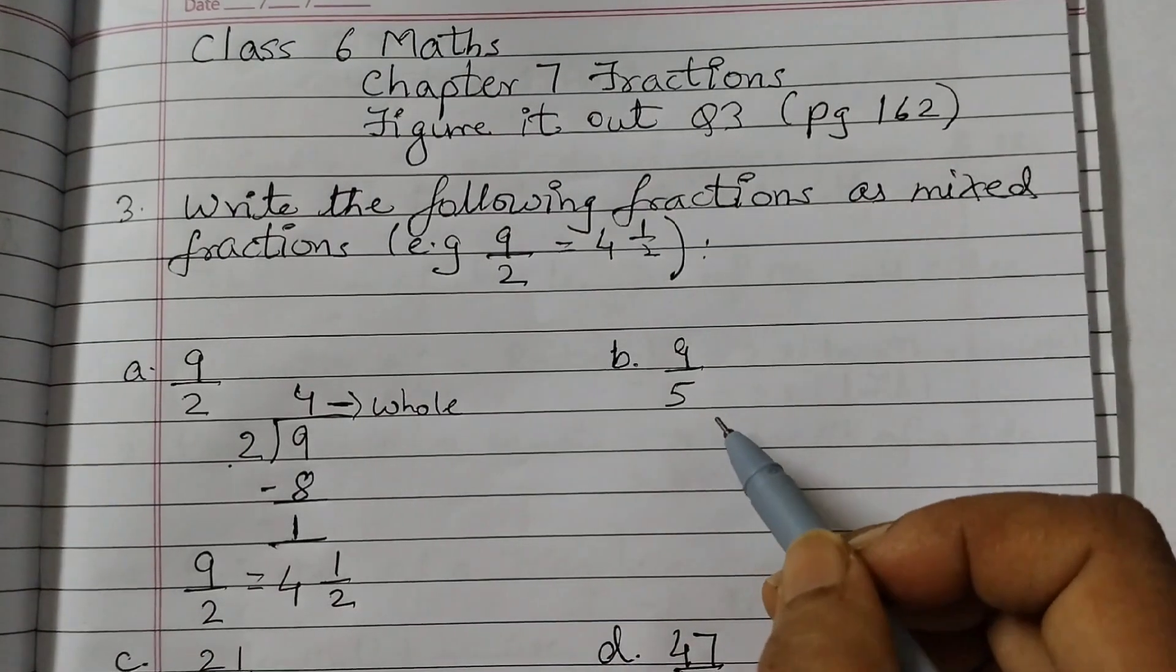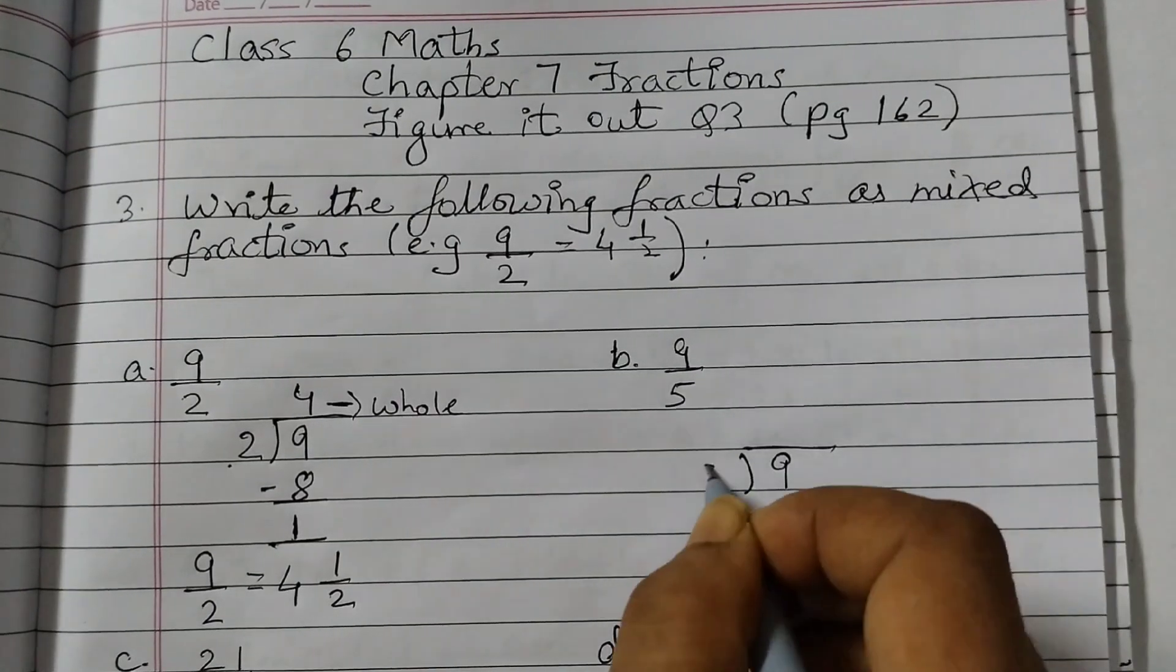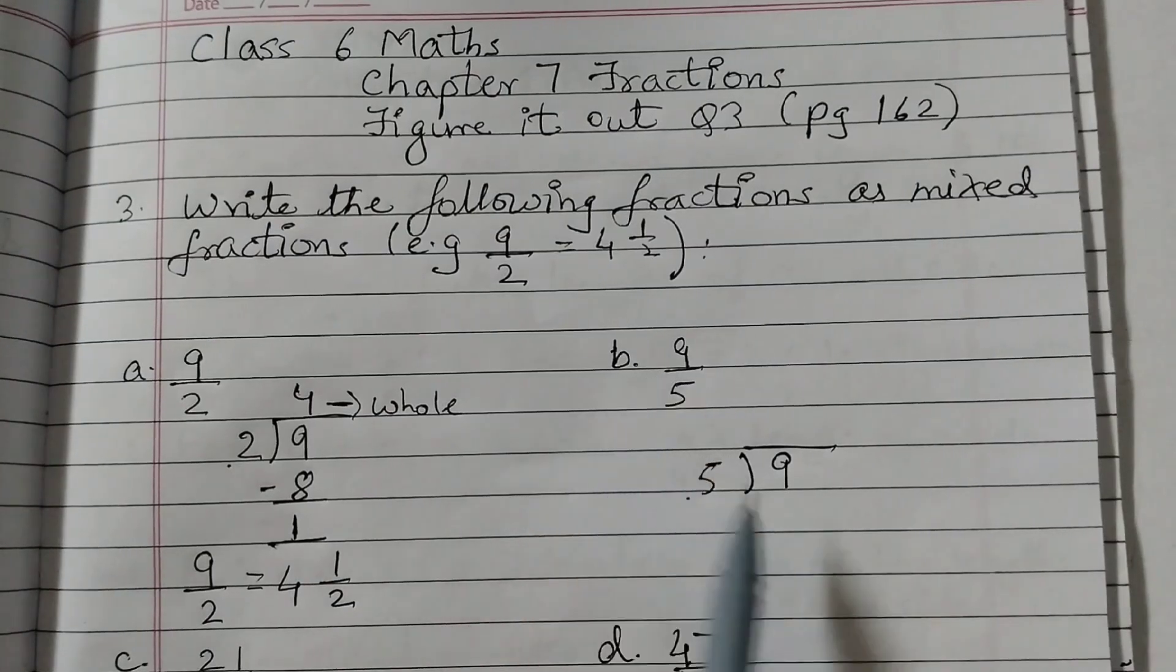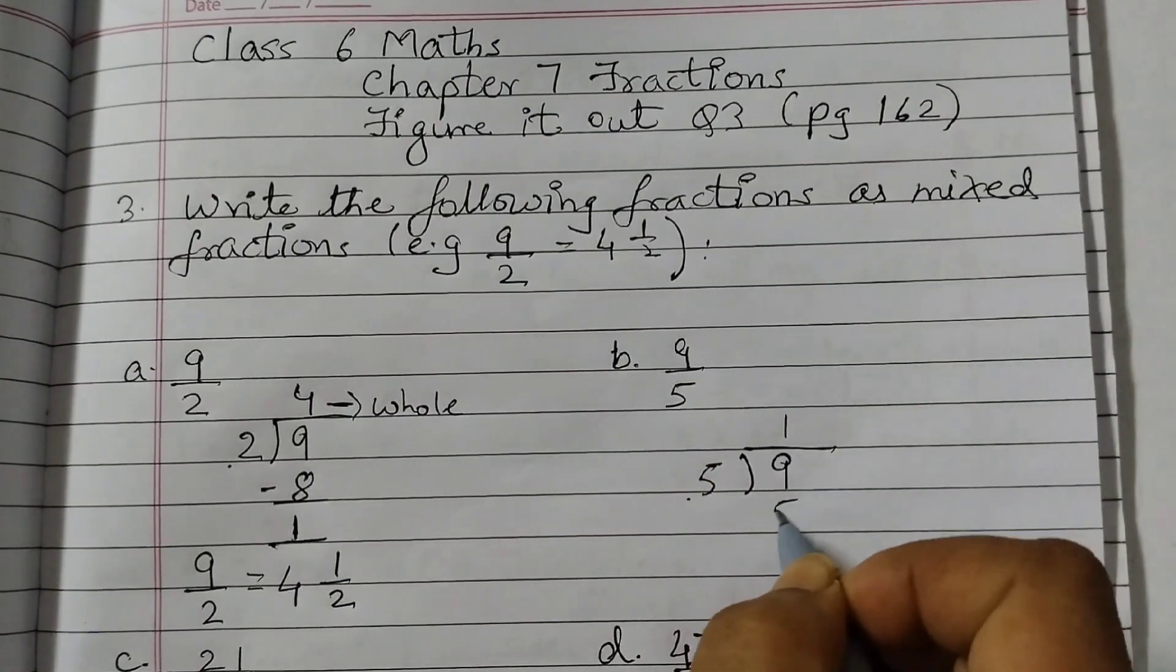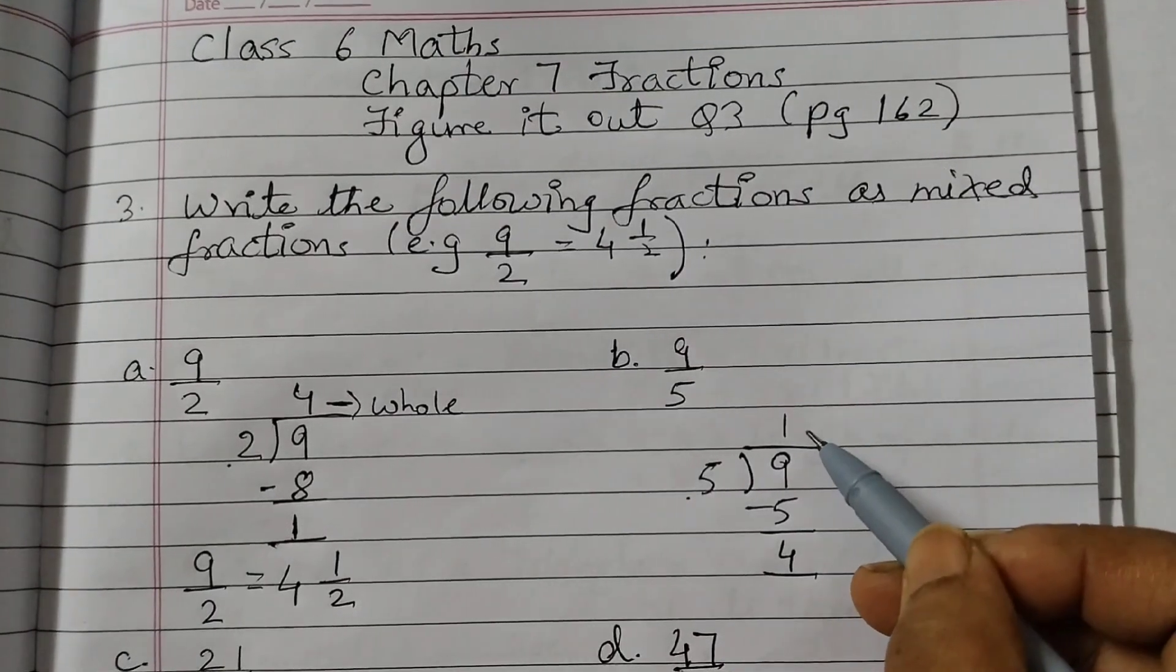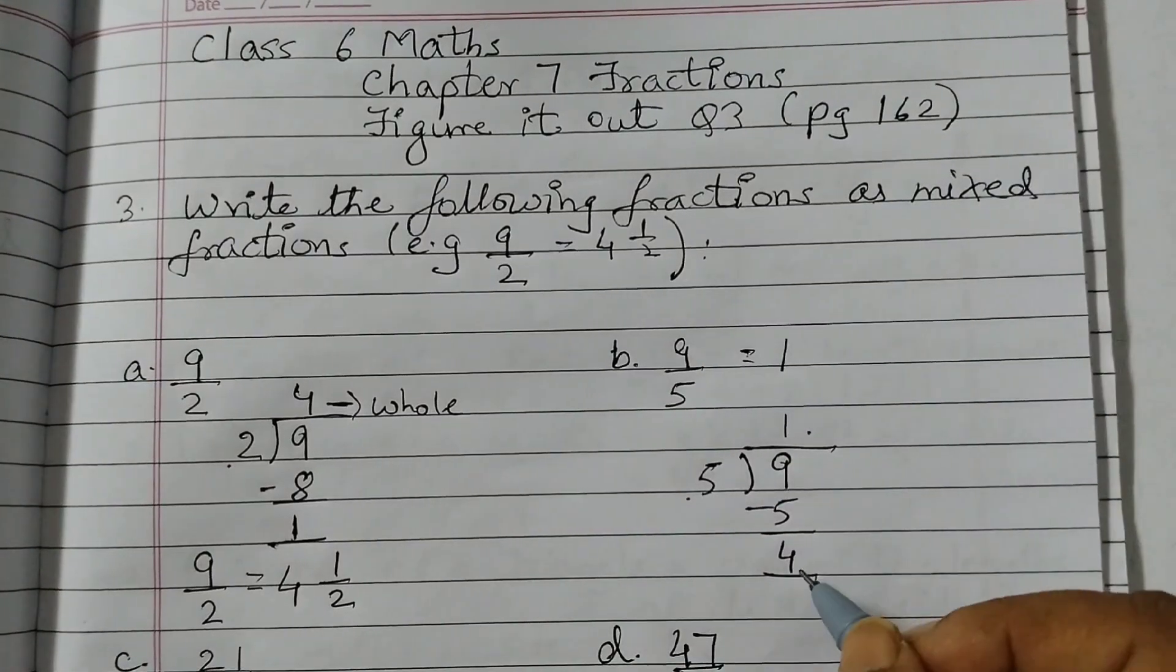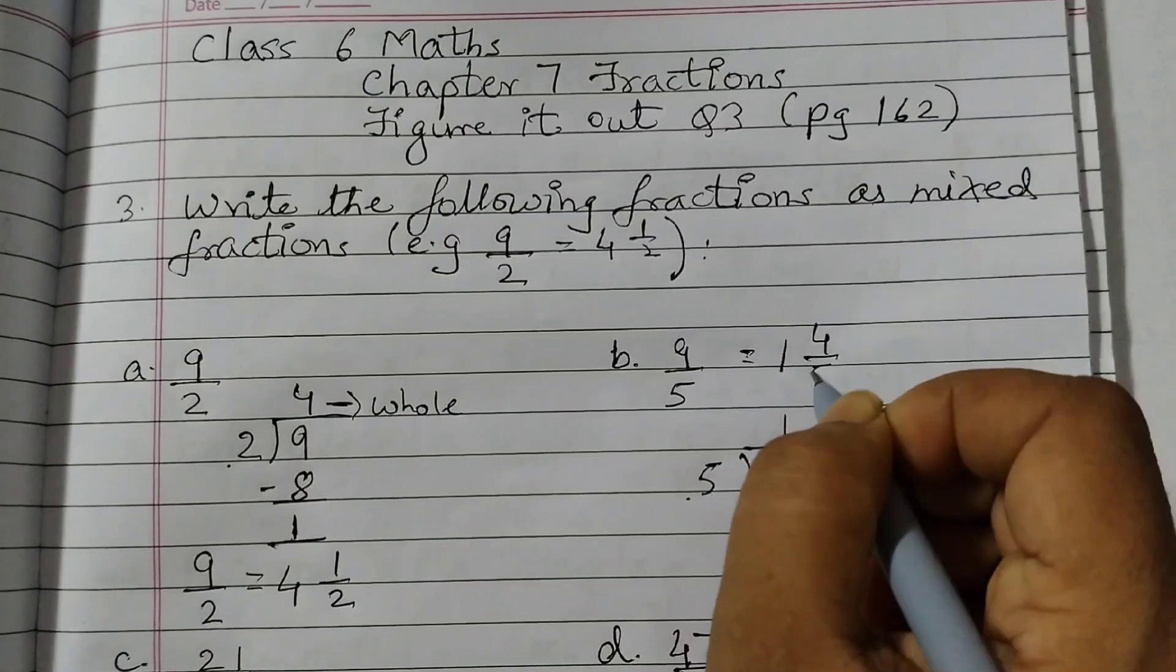9 upon 5, same way we will do. 9, 5 outside. The denominator we write outside, numerator we write inside. So 5 ones are 5, 9 minus 5 is 4. So this is the whole, so that means this is equal to 1 whole and then 4 upon 5.